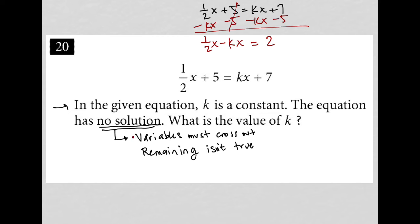Now, in order for this first step here to be accomplished, k has to be some value that makes the x terms cross out. Well, what would that value be? It could only be 1 half. So if k were 1 half, then I'd have 1 half x minus 1 half x, which would cross out.